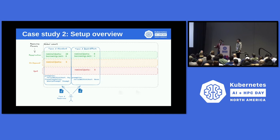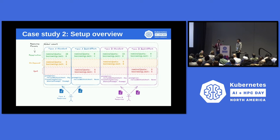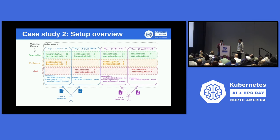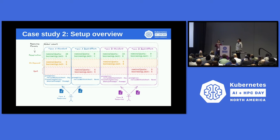Similarly, we can define Team B with two queues. We've added some borrowing limits so that the best-effort cluster queue in the spot flavor can borrow from the best-effort quota on Team B. All of these queues are in the same cohort. As you have more teams, you can expand further. If you want to isolate a group of teams, you can create a separate cohort — each cohort can only borrow resources within itself. That's the concept of the two-level hierarchy.